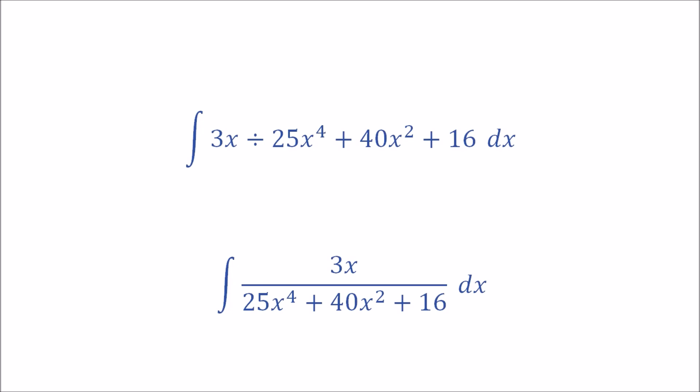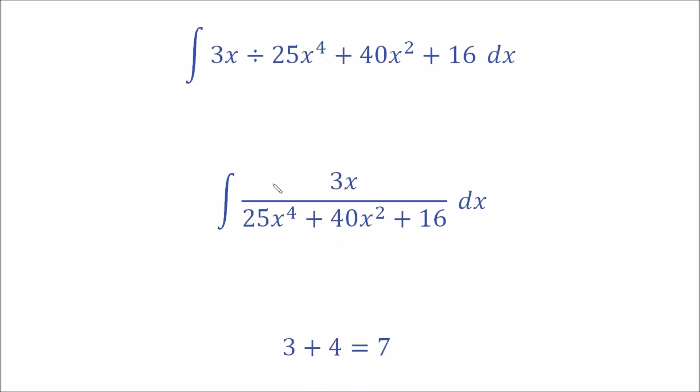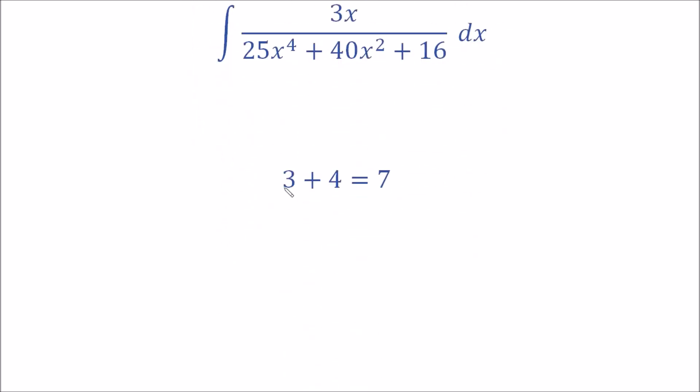For example, consider 3 plus 4, this is an addition and is equal to 7. Three and four go in and seven comes out, so only two things can go in.